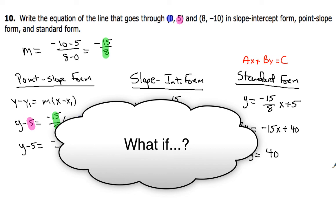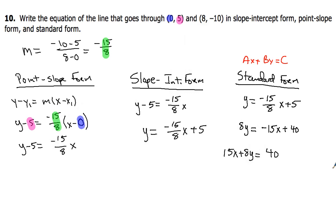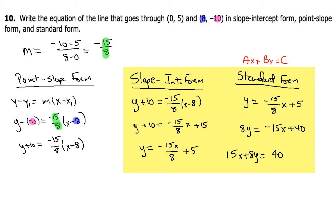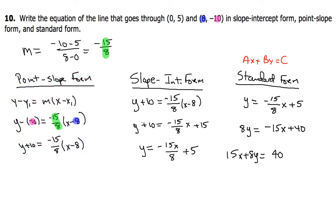What if we had used the other point (8, negative 10) instead? Standard form and slope-intercept form will look the same regardless of which point you start with. But the point-slope equation will look a little different depending on which point you use. That's it for this lesson — it should all be review from Algebra 1. We'll practice in class; make sure you have these down solidly. Have a great day!